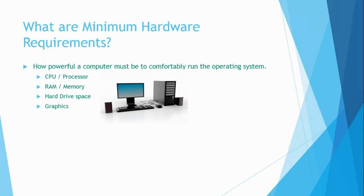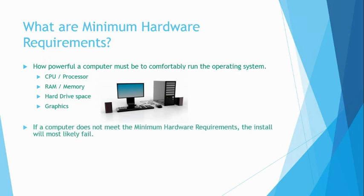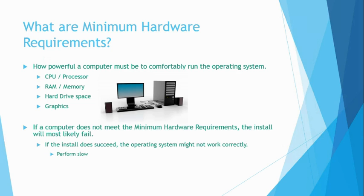This brings the question: what happens if the computer does not meet the minimum hardware requirements? If a computer does not meet the minimum hardware requirements for an operating system, the chances are the installation will fail. It is possible, sometimes, to get an operating system to install on a computer that has slightly less than the minimum hardware requirements. When this is the case, although the operating system will install, the chances are it will not work correctly. This could be because of performance limitations, and it could also be that the computer or the operating system crashes or hangs, which will not provide you with the best operating system experience.